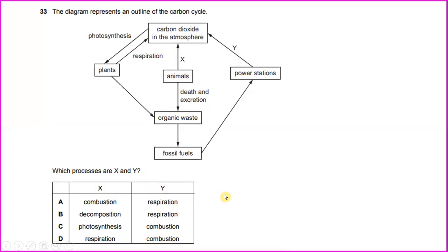The diagram represents an outline of the carbon cycle. When the animals do the process of respiration, what will happen? Carbon dioxide will be in the atmosphere. And when the power station releases carbon dioxide in the atmosphere, that process we call it combustion. So the answer for this will be D.